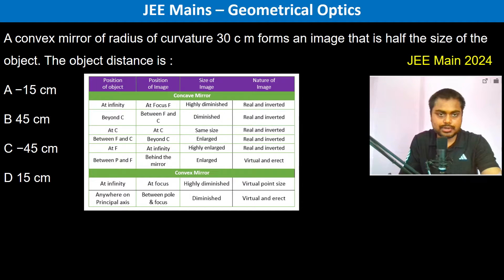A convex mirror of radius 30 centimeter, so this is convex and the radius is 30 centimeter, therefore focus is going to be 15 centimeter. It forms an image that is half the size of the object, so therefore magnification minus V by U is equal to height of image is half of the height of object.